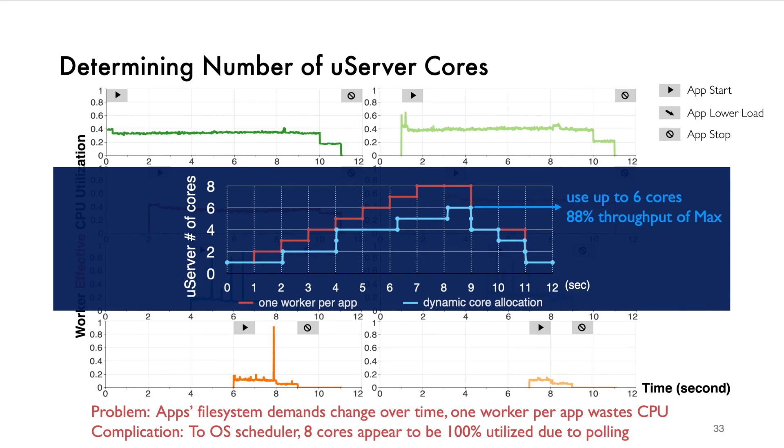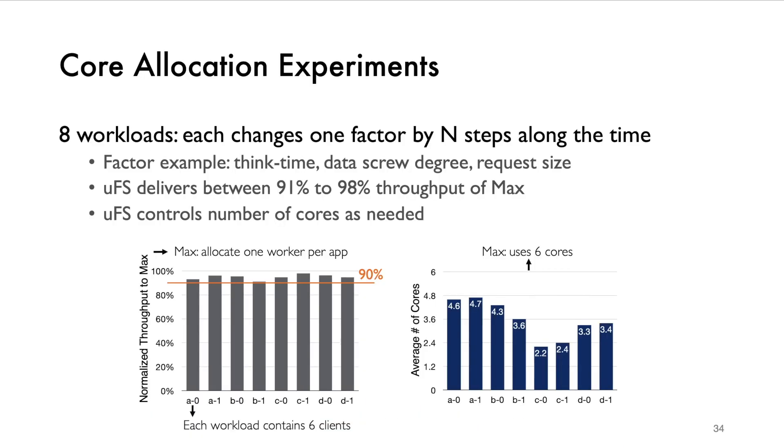By using dynamic load management, we can see from this graph that under the same eight application workload, UFS changes the number of cores when the load increases and decreases, using up to six cores while achieving 88% throughput of the maximum.